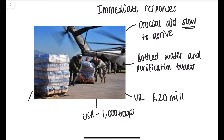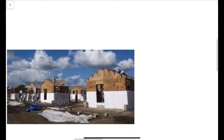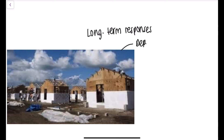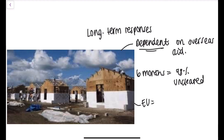The issue is that Haiti is an LIC, so the resources needed to respond to an earthquake weren't available due to lack of money. This feeds into the long-term responses: Haiti was dependent on overseas aid. Six months after the earthquake, 98% of the rubble remained uncleared, and to this day Haiti is still suffering the consequences. The EU gave $330 million, and the World Bank waived Haiti's debt repayments for five years.